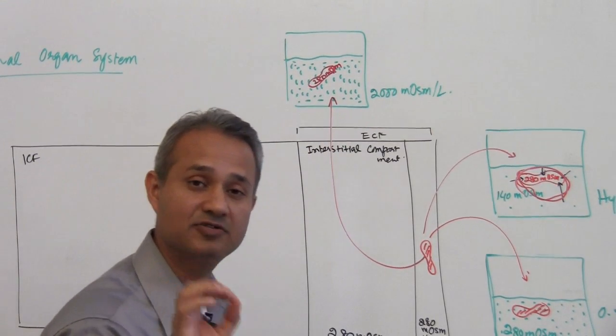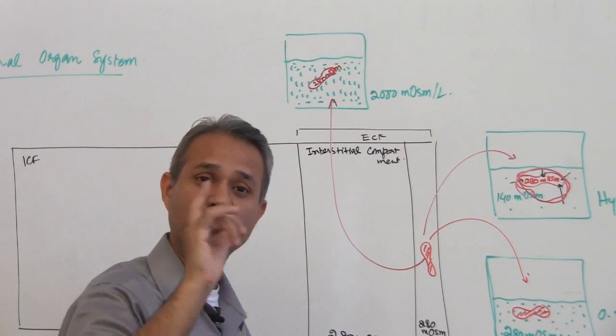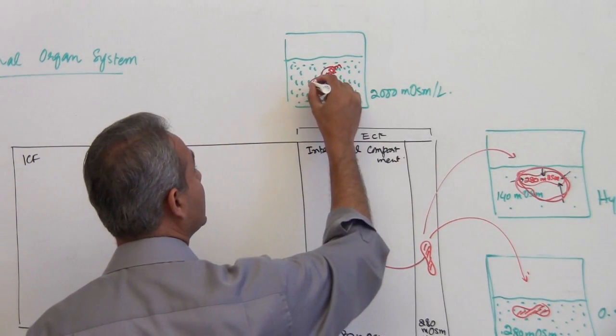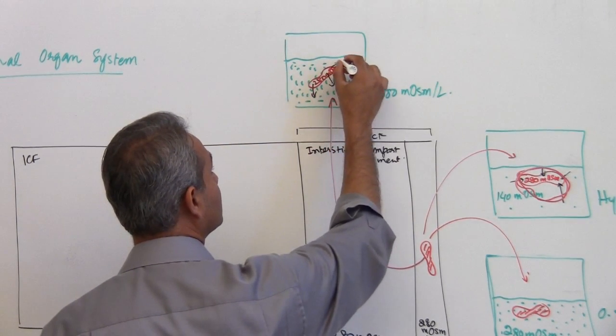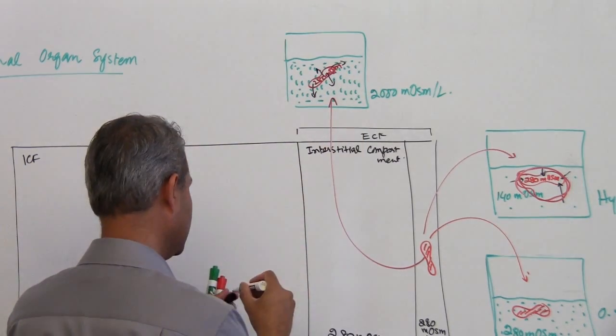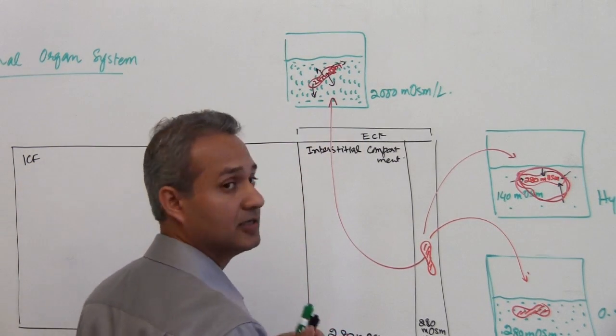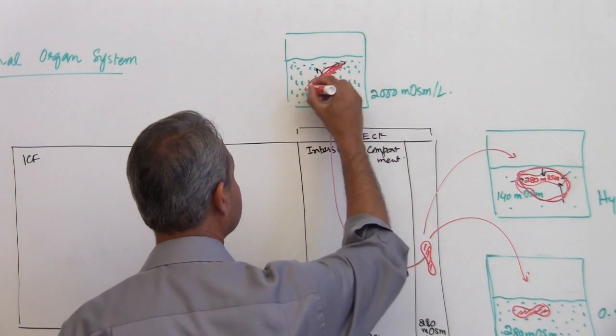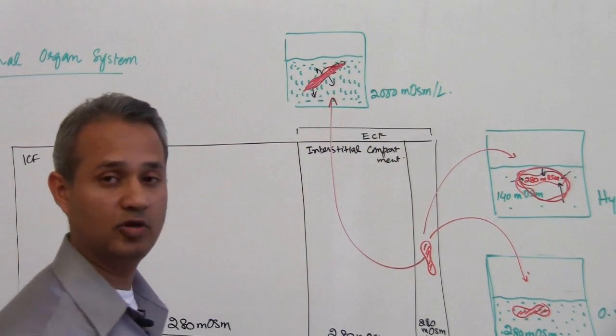The RBC water concentration, relative water concentration, is more. So the water is going to start moving out of the RBC. So what is going to happen to our poor RBC is going to shrink, yes the RBC is going to shrink and collapse.